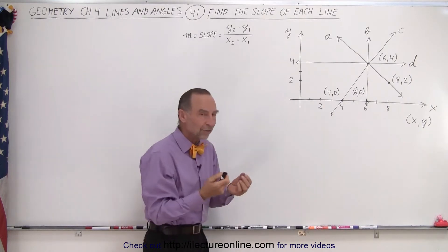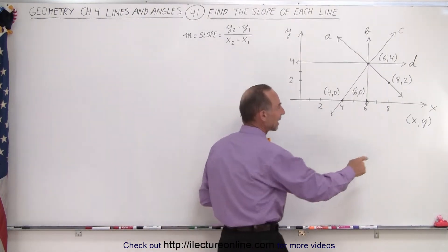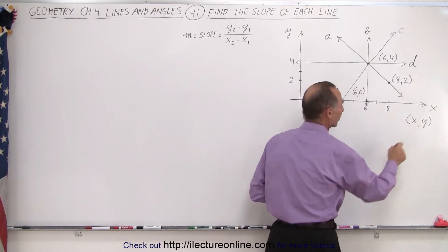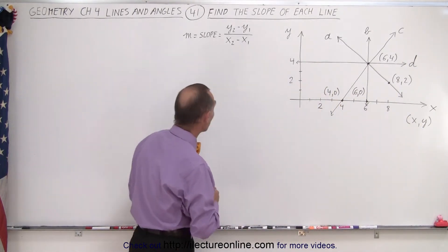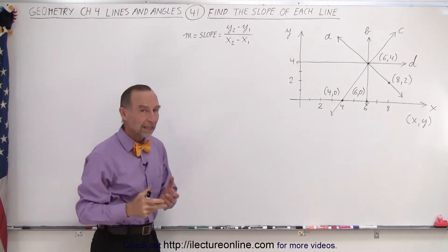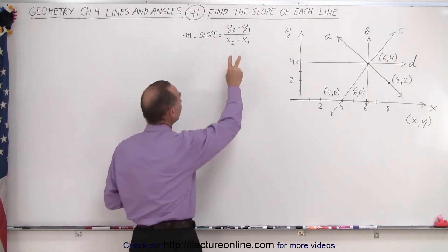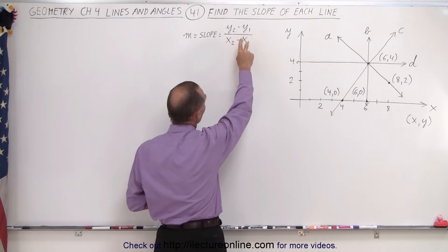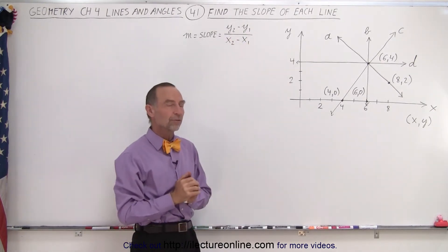Notice that whenever we are given the coordinates of a point, the x value comes first and the y value comes next. By now we should know that to find the slope, which is also defined by the letter m, is simply the difference between the two y values of two points divided by the two x values of two points.